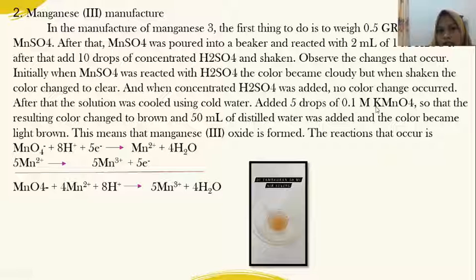In the manufacture of Mn(III), the first thing to do is to weigh 0.5 grams of MnSO4. After that, add 10 drops of concentrated H2SO4 and shake. Observe the change that occurred.